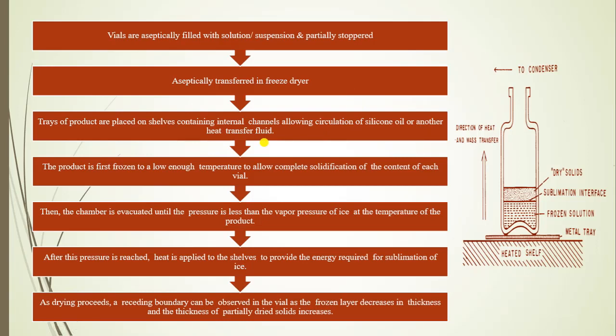Trays of the product are placed on shelves containing internal channels which allow circulation of silicon oil or other heat transfer fluid, which provides heat for freezing as well as for drying. The product is fast-frozen to a low enough temperature to allow complete solidification of the contents in each vial. After that, the chamber is evacuated until the pressure is less than the vapor pressure of ice at the temperature of the product. The pressure difference is an important parameter — if the pressure is not less than the vapor pressure of ice, sublimation does not take place.